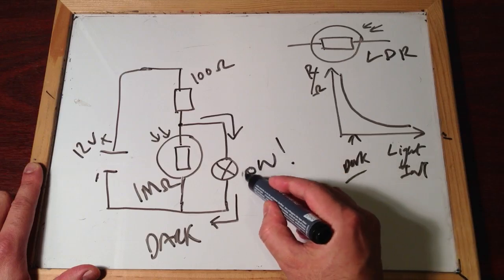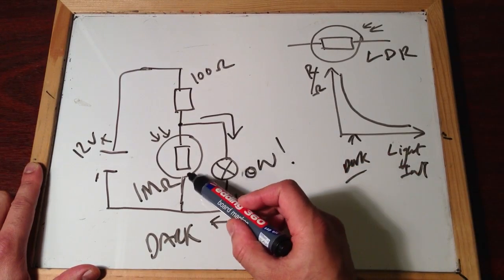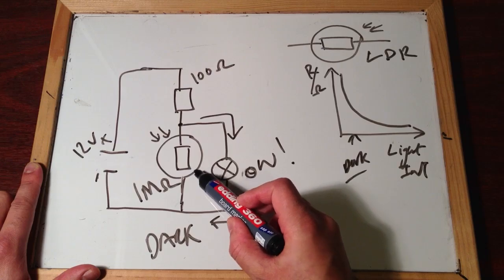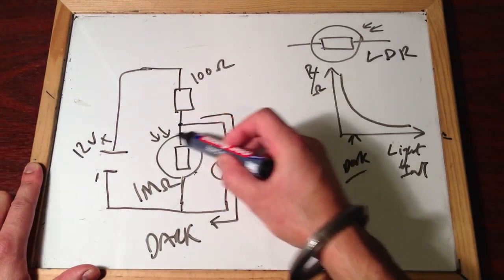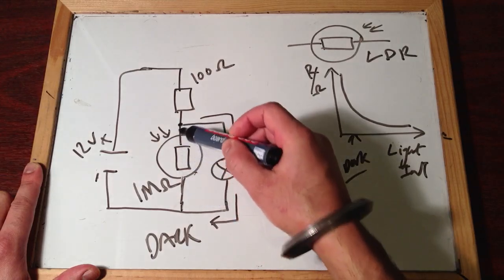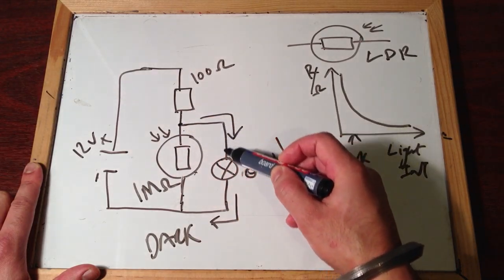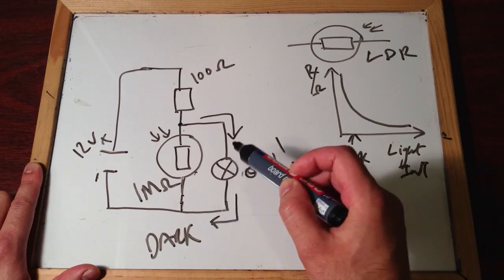And this is the basic setup in every single street lamp in the UK and other countries as well. Now, you have some sort of light dependent resistor, and they have this kind of setup, which means, when it's dark, the LDR will have high resistance, which will allow current to flow, or be diverted down this path, which will turn the bulb on.